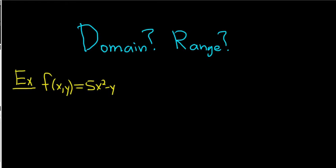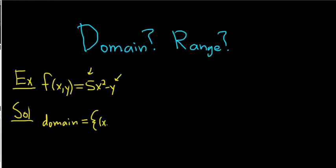The domain here is the set of all inputs — it's the set of all (x, y) pairs that we can plug into this expression, where it makes sense. There's no division by zero, no square roots, nothing funky. We can plug in any x and any y. So the domain is equal to the set of all ordered pairs (x, y) such that x and y are real numbers.